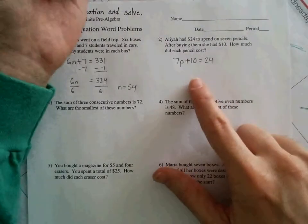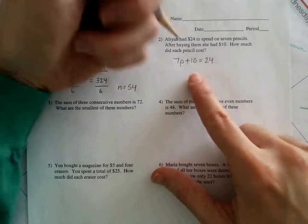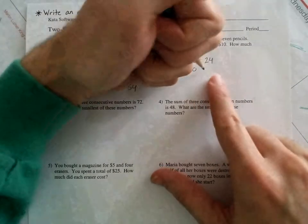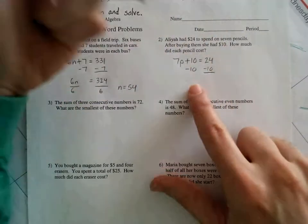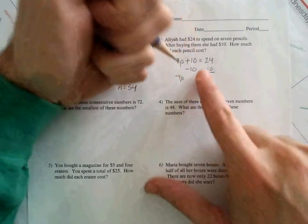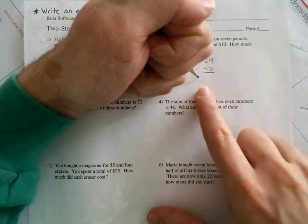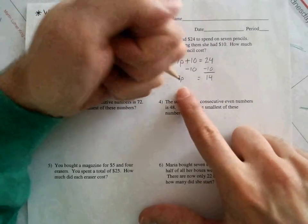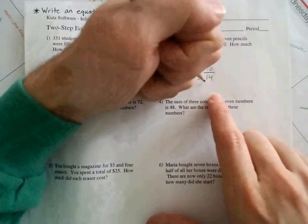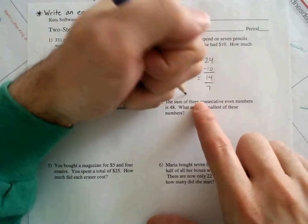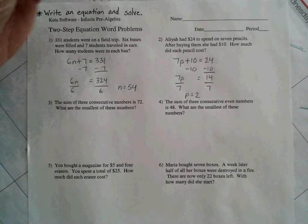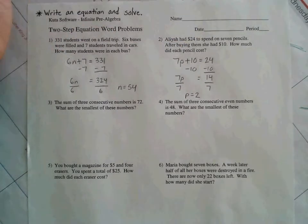So that's an equation you can use to set up and solve for this particular problem. Now, from here, you can go ahead and start the solving process. Focus on the side with the variable. Let's work with the 10 first. Opposite of adding 10 is subtracting 10. Do it on one side of the equation, do it to the other side. Bring down that 7P. This cancels here. Bring down the equals. We're left with 14 here. And then finish it off by doing the opposite of multiplying by 7, which is dividing by 7. So here, you're left with 2 for that final answer. Therefore, 2 bucks for each pencil.